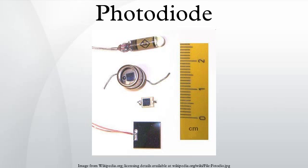Photodiodes are used in consumer electronics devices such as compact disc players, smoke detectors, and the receivers for infrared remote control devices used to control equipment from televisions to air conditioners.